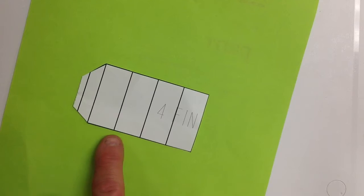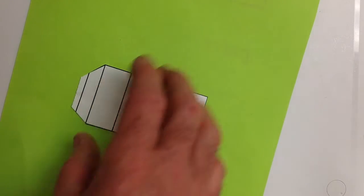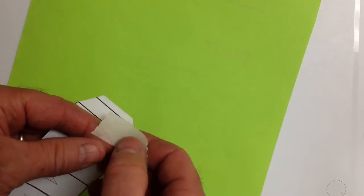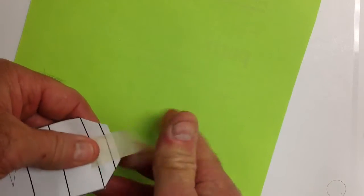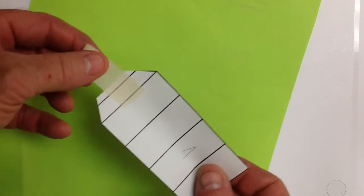When done, your alignment template should look something like this. Place a piece of tape about an inch long on that tab here.